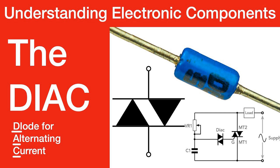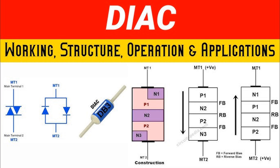Operational summary — non-conductive state: the DIAC remains in a non-conducting state when the applied voltage is less than its breakdown voltage in either direction. Breakdown: when the applied voltage exceeds the breakdown voltage in either polarity, the DIAC switches to a conductive state.